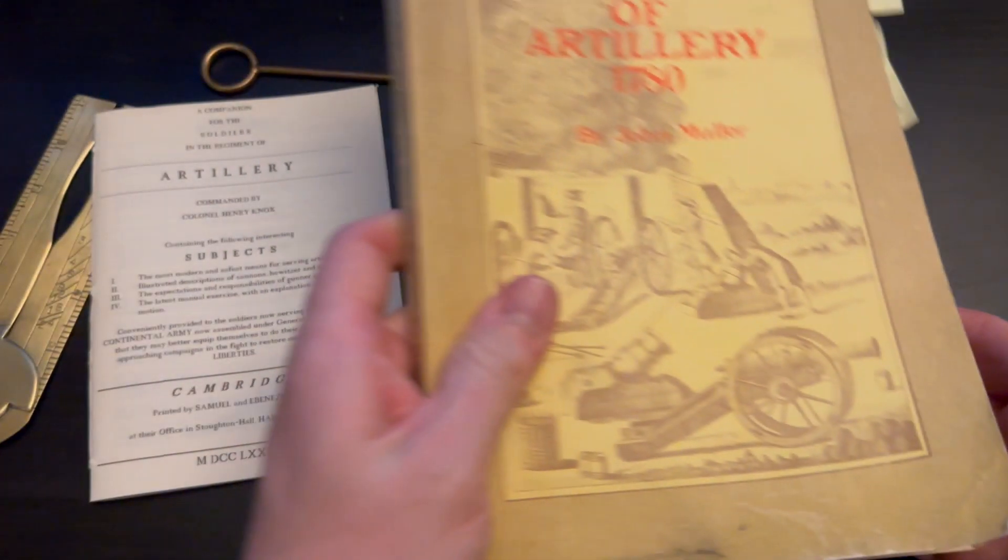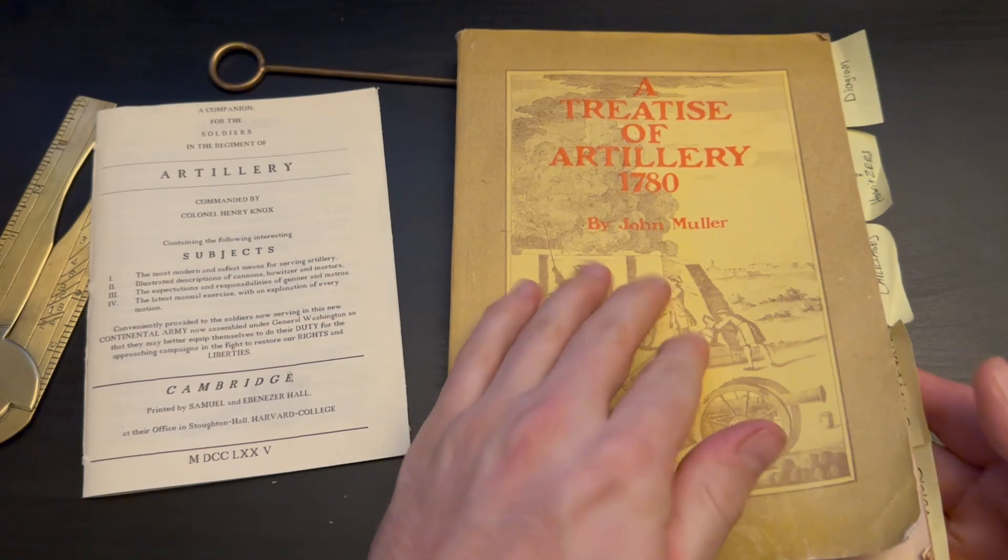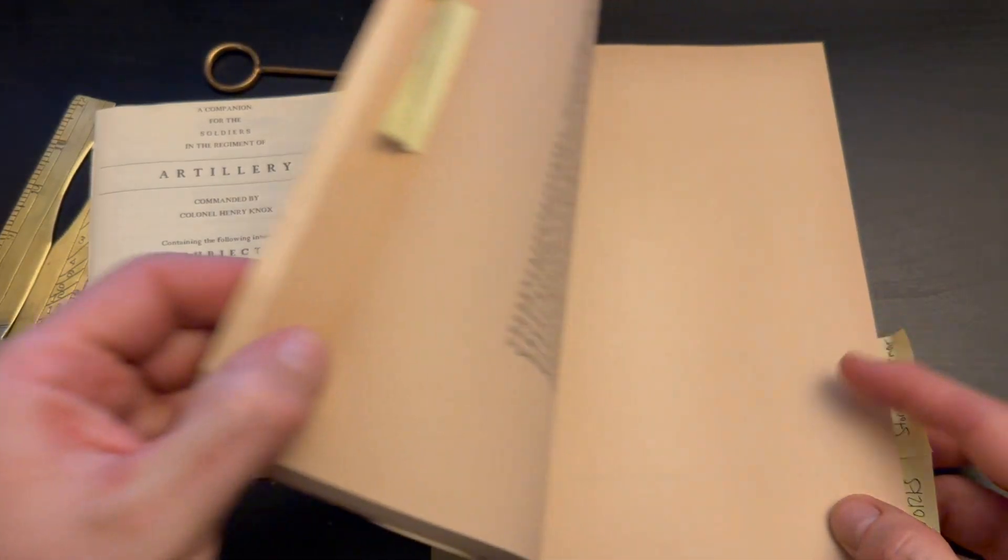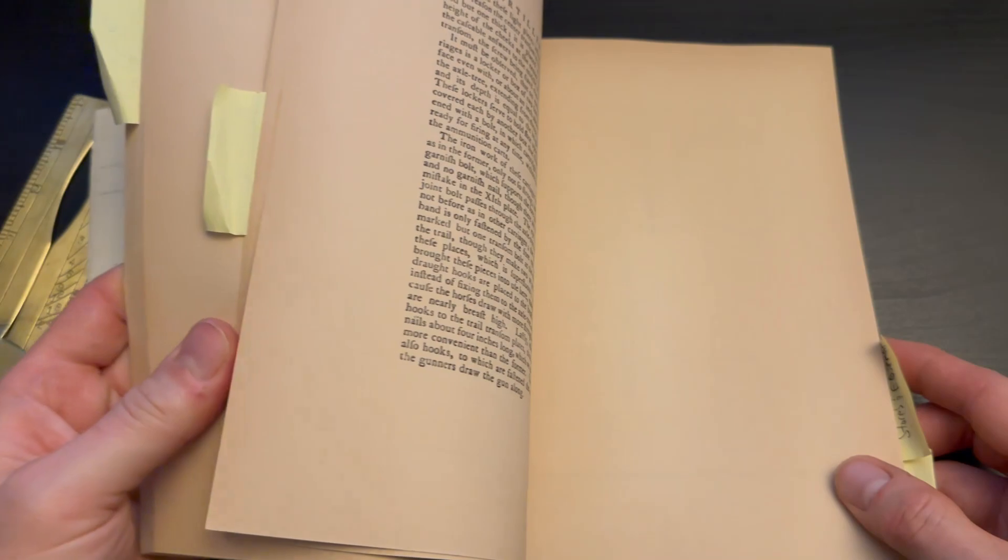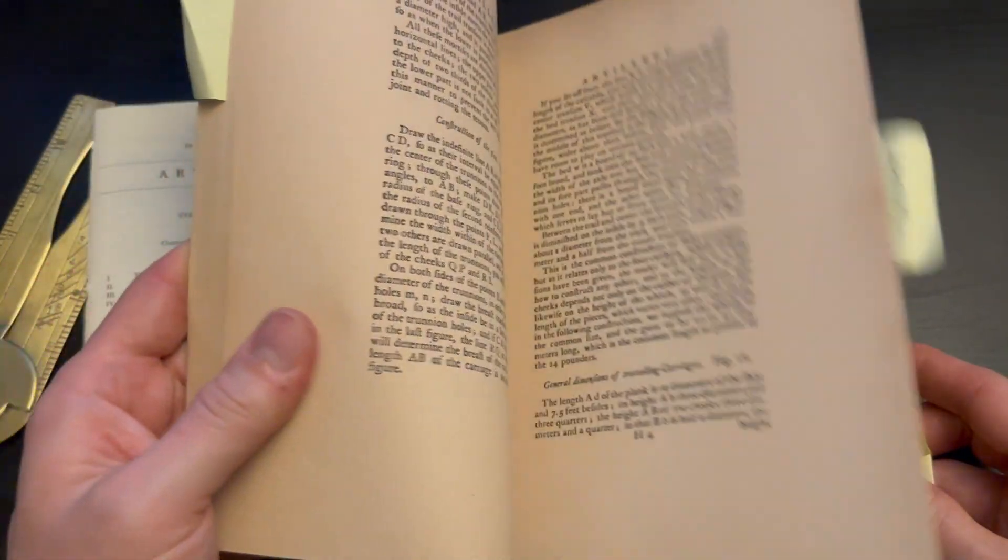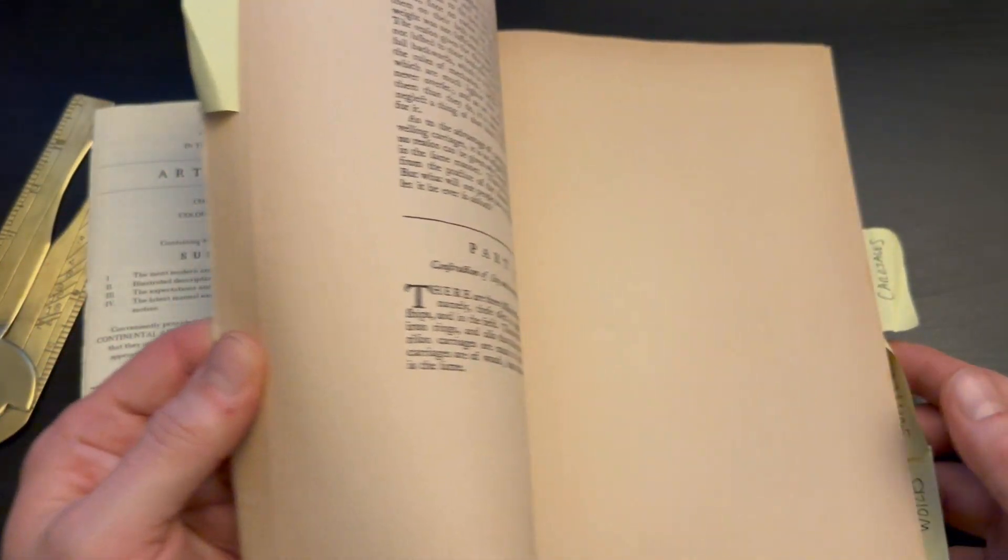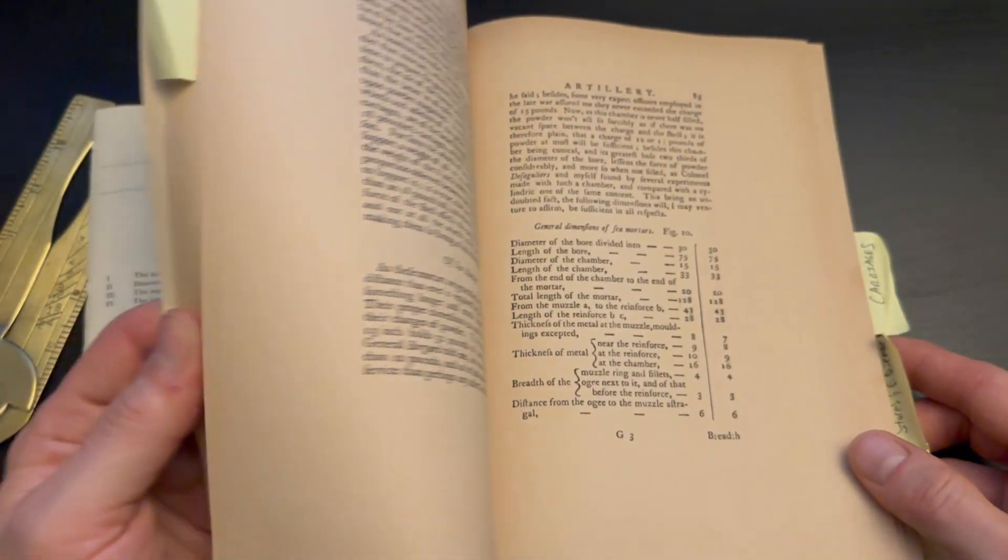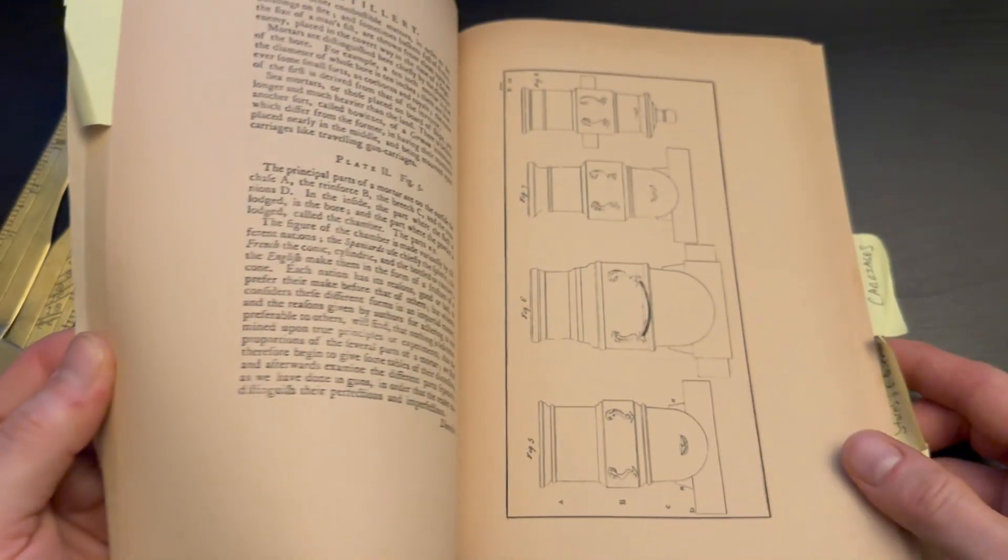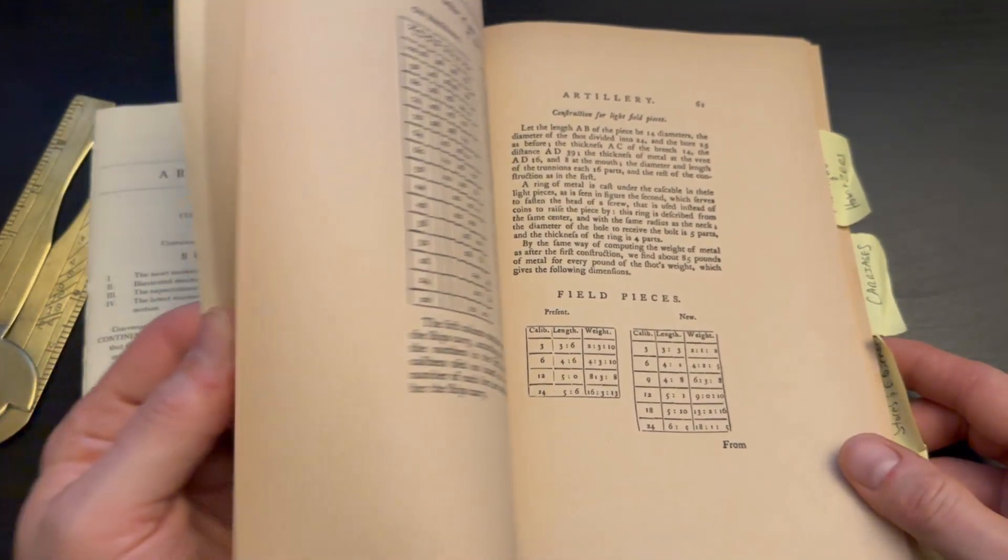For a period description, let's turn to John Mueller's A Treatise of Artillery. First published in 1757 and a revision in 1780, this is one of the main and most widely used artillery manuals available to the artillerists in Washington's army during the American Revolution.